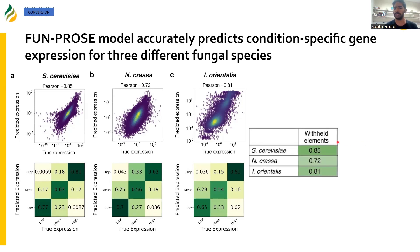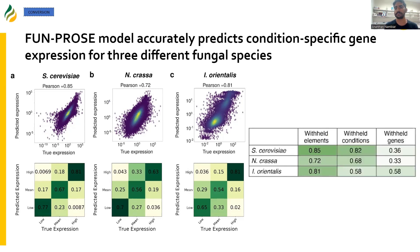We also wanted to address the more difficult question of what if the model sees a completely new condition or a completely new gene. So we ran those experiments as well, and we saw that for withheld conditions there's a slight drop, but it still does really well. With withheld genes there's a more significant drop, but we still do pretty well, especially since the random expectation is just zero.